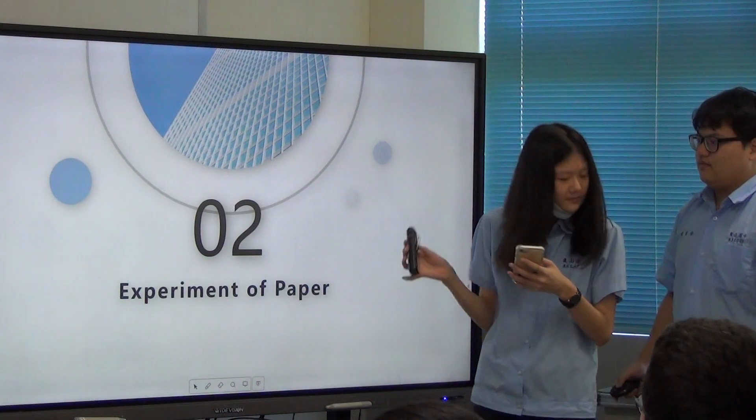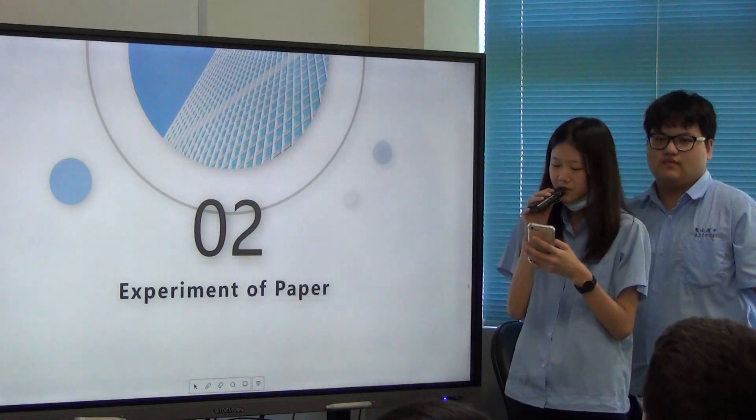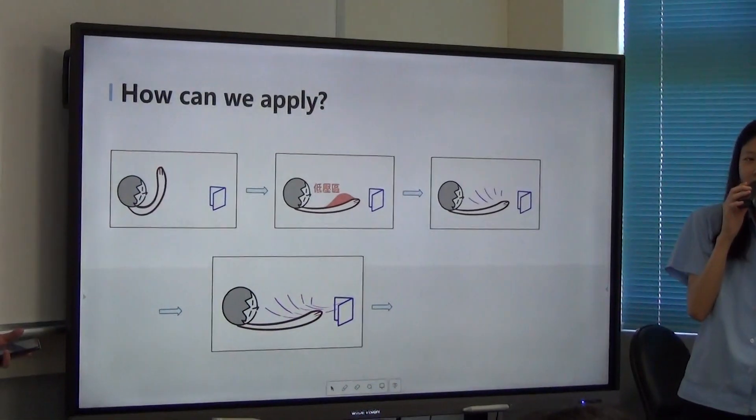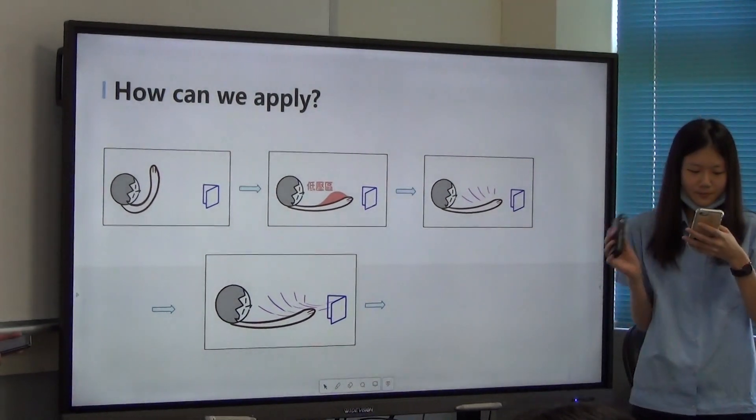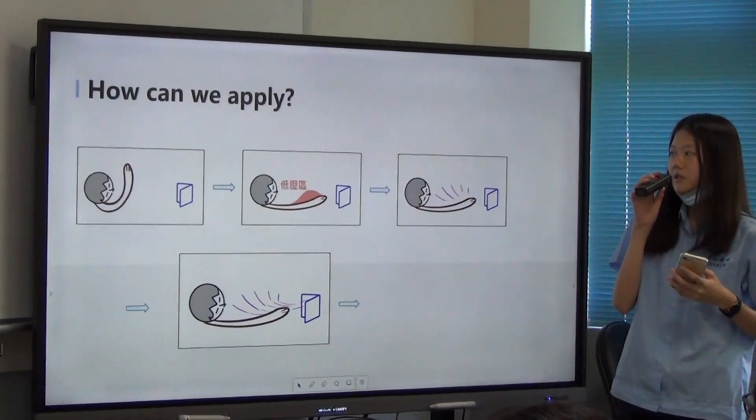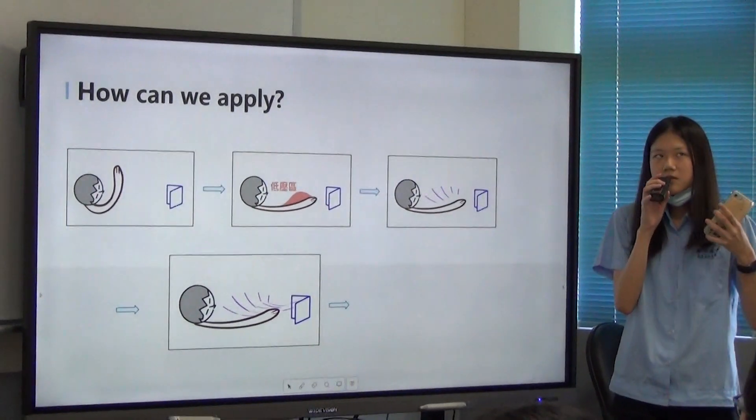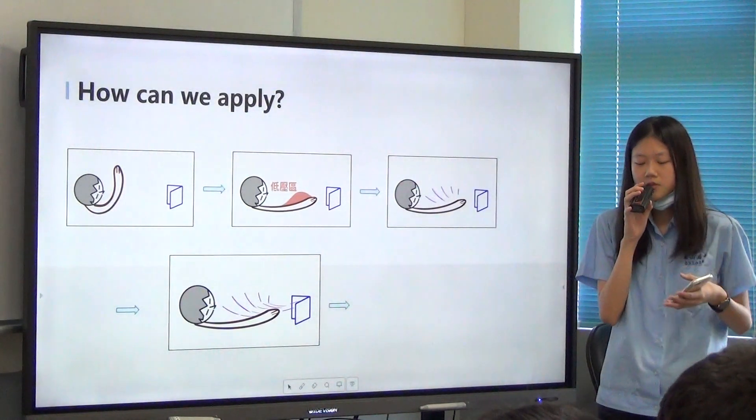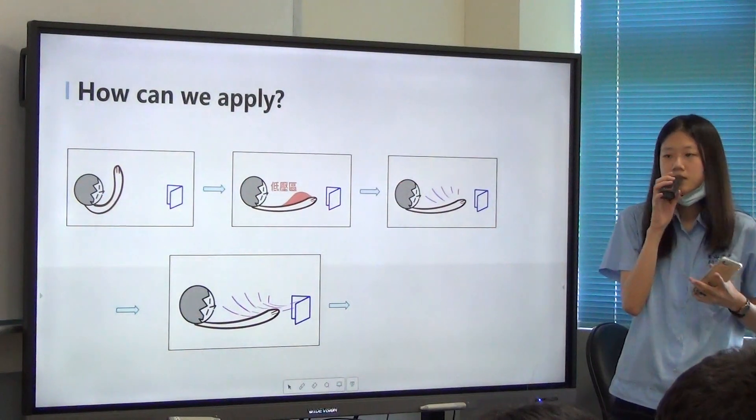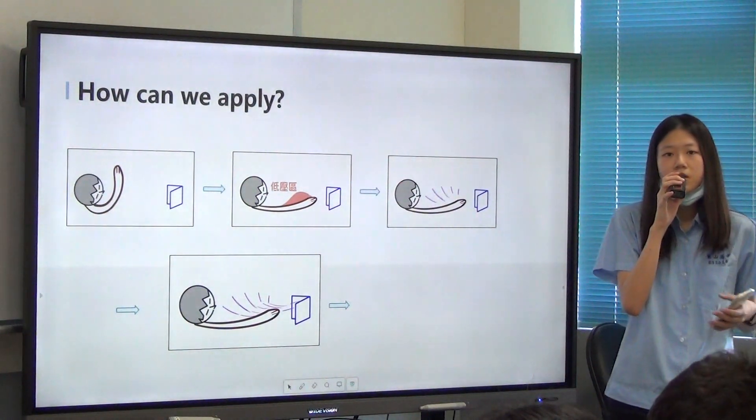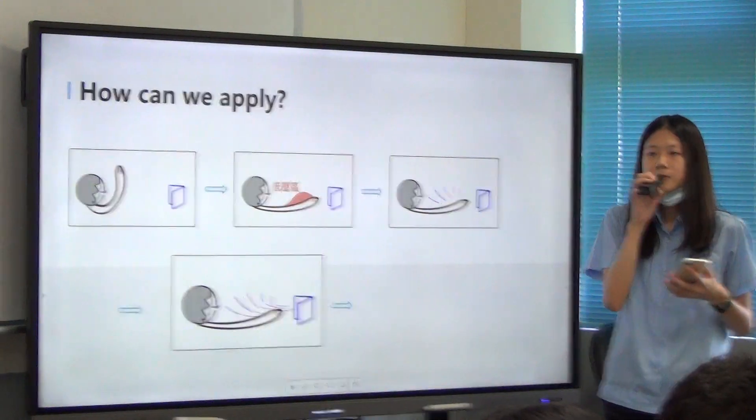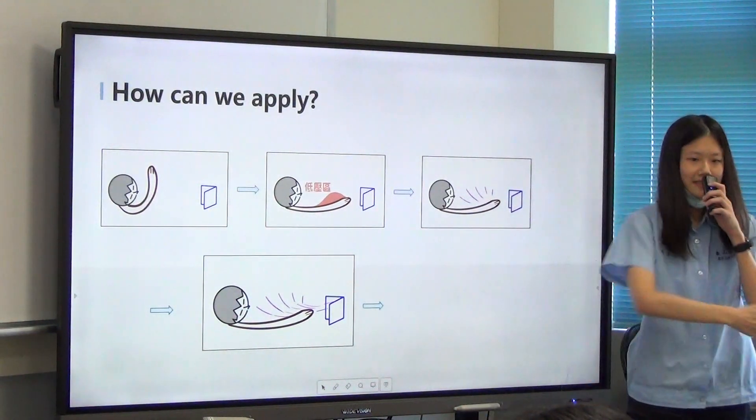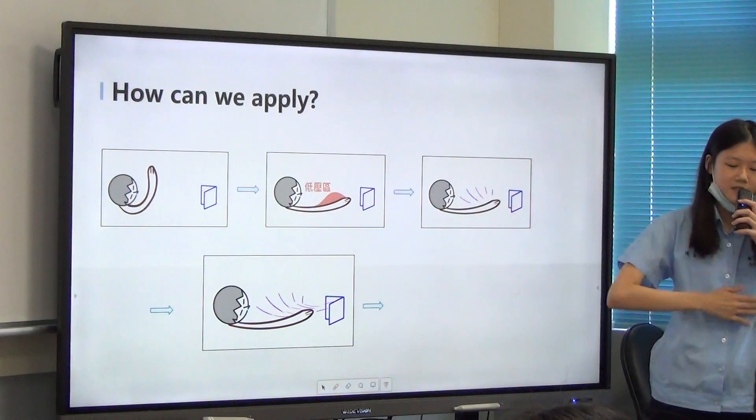For the first experiment to verify Coanda effect, what we basically need is a piece of tiny paper and an arm. Due to the definition of Coanda effect, there are two elements required in this experiment: one is the fluid and another is the convex surface. And to create the fluid, we should first create a low pressure zone by waving your hands like this, so now we push the air out of the zone.